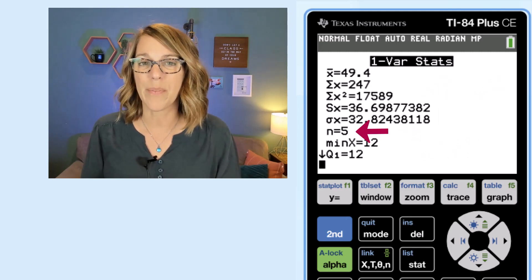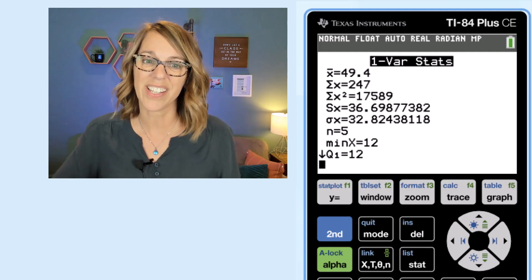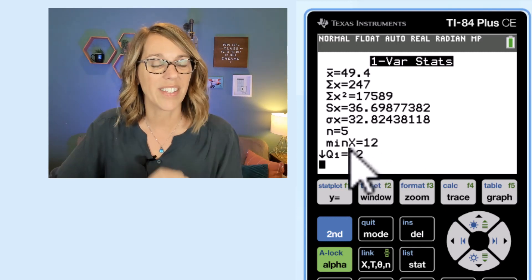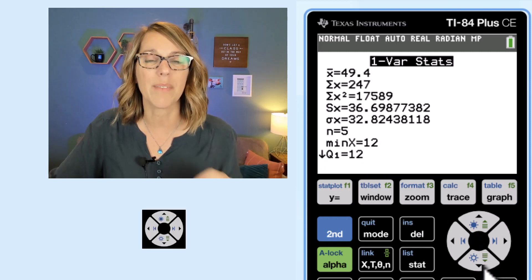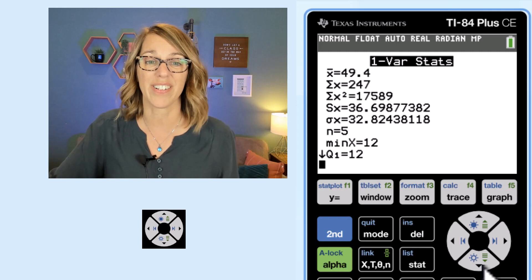N of course is the number of data values in our list. And before I get to the next few, notice there's a down arrow next to the q1. That means that I can hit my down arrow to get to more measures, to get to the entire list.